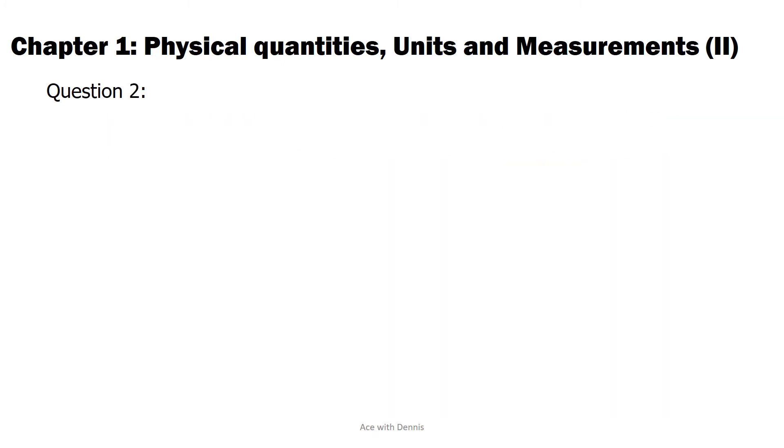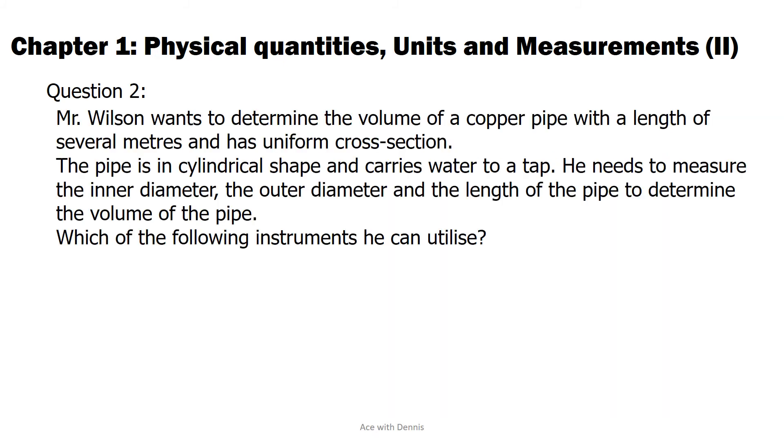Question 2. Mr. Wilson wants to determine the volume of a copper pipe with a length of several meters and uniform cross-section. The pipe is in cylindrical shape and carries water to a tap. He needs to measure the inner diameter, the outer diameter and the length of the pipe to determine the volume of the pipe.